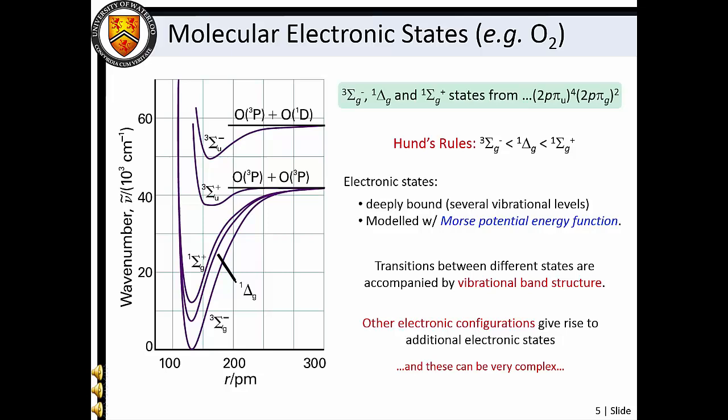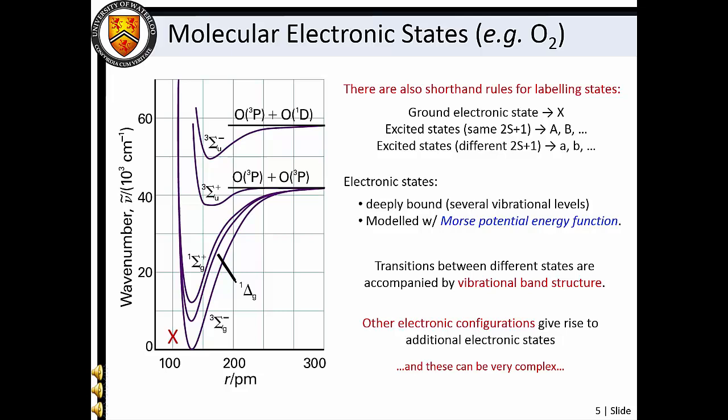Since each potential energy well can support a number of vibrational levels, we find that electronic transitions between different states are accompanied by vibrational band structure. Furthermore, each vibrational level has associated with it a ladder of rotational energy levels. Owing to the large number of possible molecular electronic states, some shorthand rules for state labels have been developed. The ground electronic state is referred to as the X state. Excited states with the same multiplicity as the ground electronic state are labeled with capitalized Roman letters that progress alphabetically as energy increases. Excited states with multiplicities differing from that of the ground state multiplicity are labeled with lowercase Roman letters that progress alphabetically as energy increases.